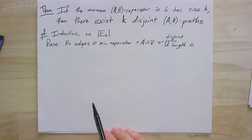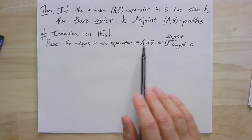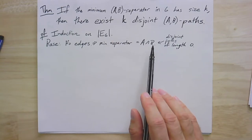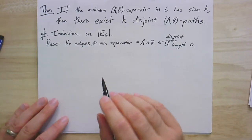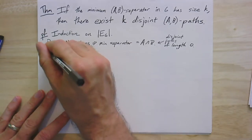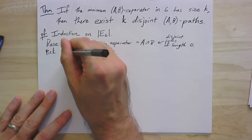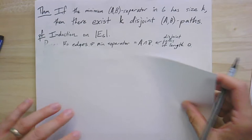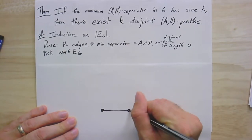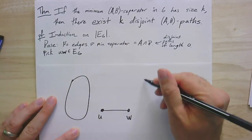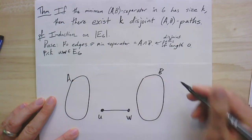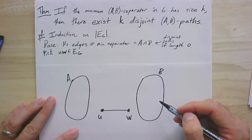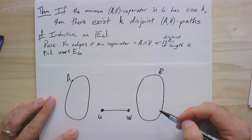We're going to prove this by induction on the number of edges. The base case is if there are no edges: then the minimum separator is just the intersection of the two sets, because every vertex in the intersection counts as one disjoint path of length zero. Otherwise, if there are some edges, we pick some edge UW in the graph. If it's just an edge between vertices in A, removing it wouldn't change the separators from A and B, and we'd be done by induction.